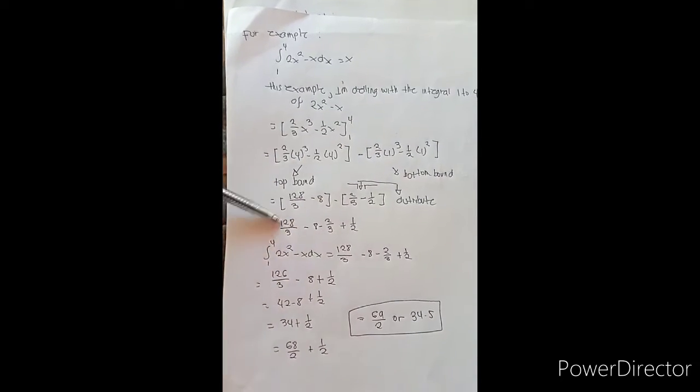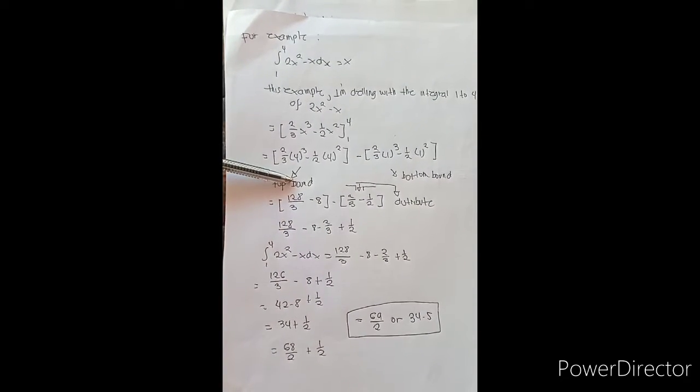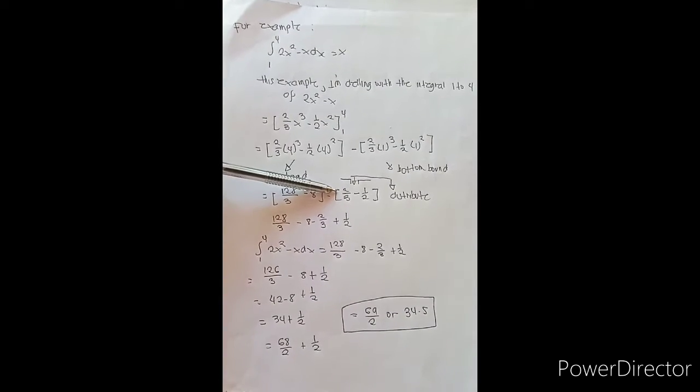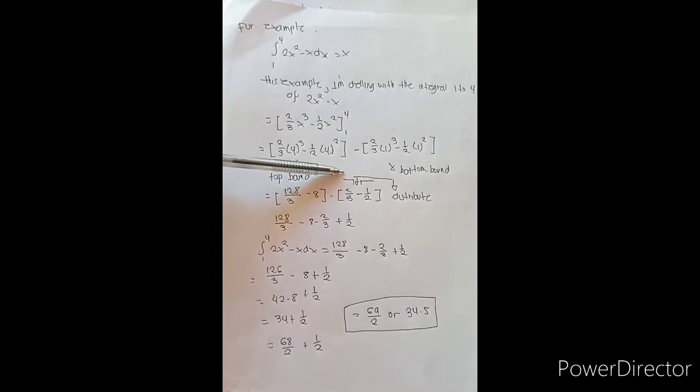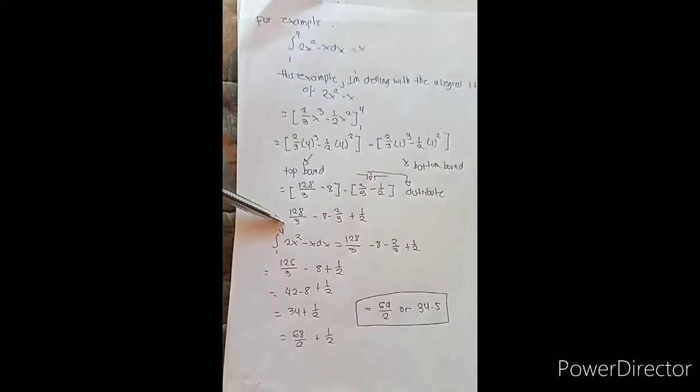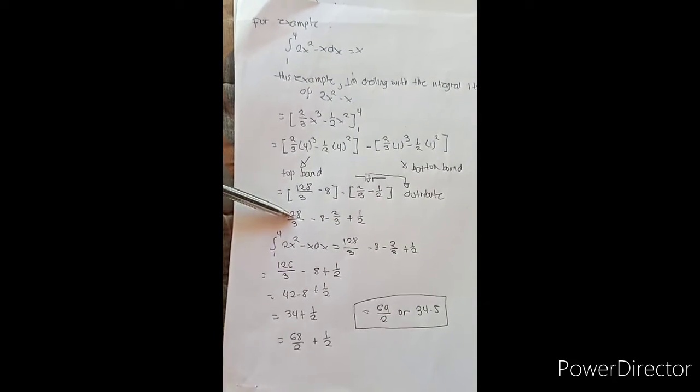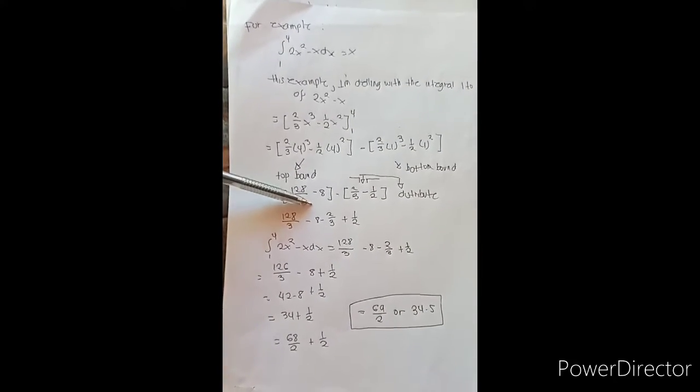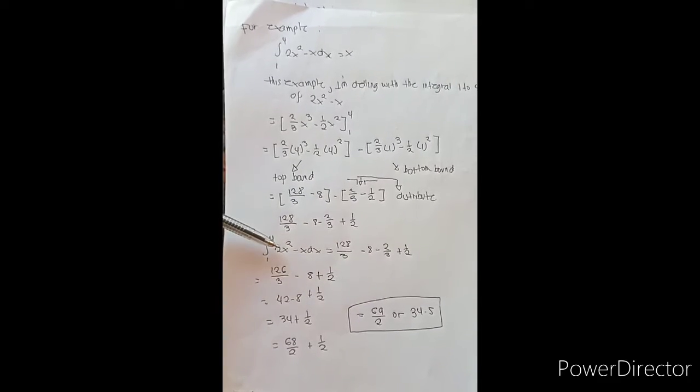So it will become 128/3 - 8 minus 2/3 - 1/2. So we need to distribute. It will become 128/3 - 8 - 2/3 + 1/2.